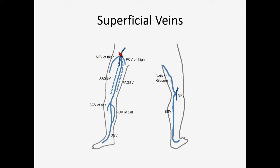The great saphenous vein starts from the dorsal venous arch, the pedal arch. It courses along the anterior aspect of the medial malleolus, then goes posteromedially, and subsequently anteromedially in the thigh, and finally joins the deep vein at the saphenofemoral junction.